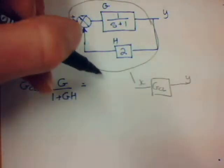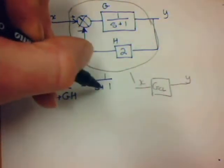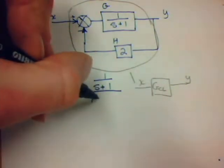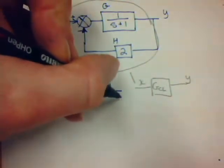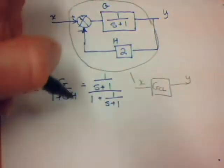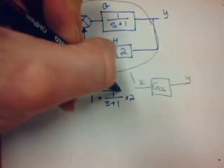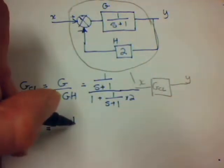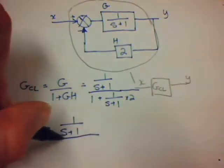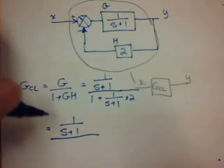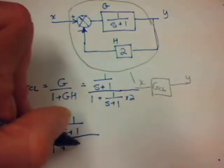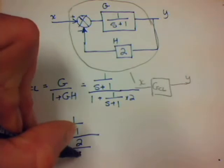So G is 1 over S plus 1, divided by 1 plus 1 over S plus 1 times H, which is 2. I can rewrite that and say we have 1 over S plus 1 divided by 1 plus 2 over S plus 1.